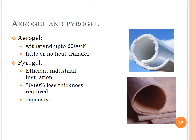Aerogel and pyrogel. Aerogel can withstand heat up to 2000 degrees Fahrenheit and allows little or no heat transfer. Pyrogel is an efficient industrial insulation material — 50 to 80% less thickness is required, but they are expensive.